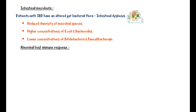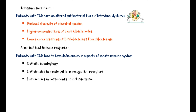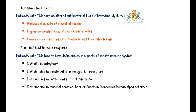Abnormal immune response also plays a major role in inflammatory bowel disease. Patients with IBD tend to have deficiencies in aspects of the innate immune system, such as deficits in autophagy, deficiencies in innate pattern recognition receptors, deficiencies in components of inflammasome, and deficiencies in mucosal chemical barrier function. These defects in the innate immune system lead to an exaggerated adaptive immune response against intestinal microorganisms.